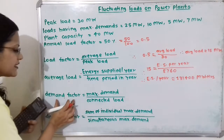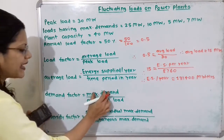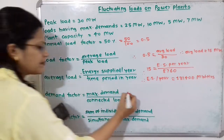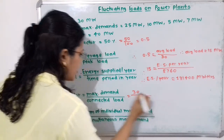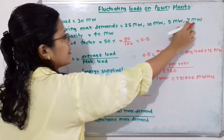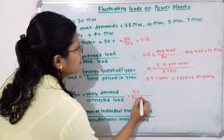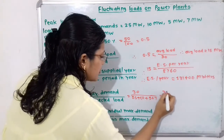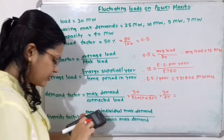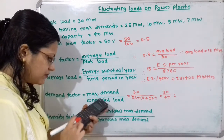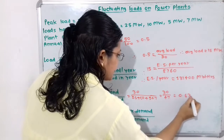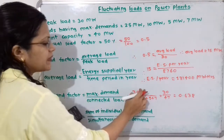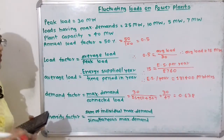Now we will calculate the demand factor. Demand factor equals maximum demand divided by connected load. Maximum demand is the peak load, that is 30 MW. Connected load is 25 plus 10 plus 5 plus 7, which equals 47 MW. So demand factor equals 30 divided by 47, which is 0.638. Both values are in MW, so the units cancel and there is no unit.